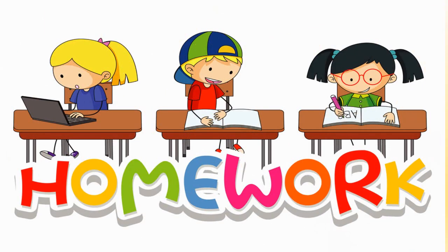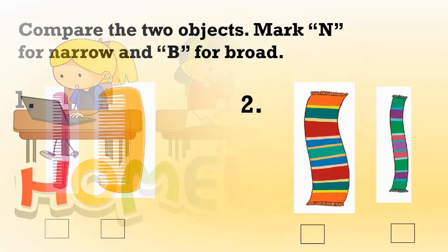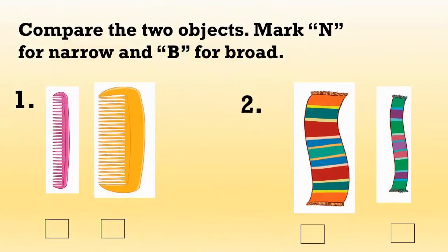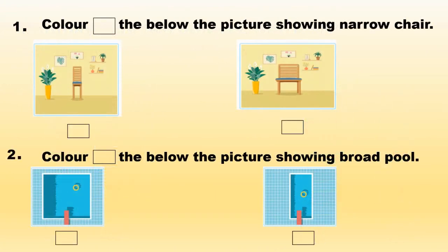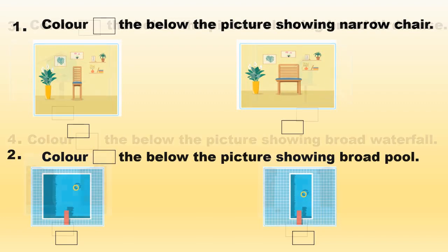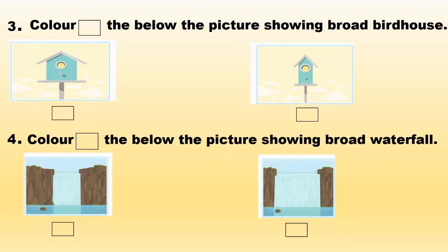Now it's your homework time. Compare the two objects and mark N for narrow and B for broad. Color the bracket below the picture showing the narrow chair. Second, color the bracket below the picture showing the broad pool. Third, color the bracket below the picture showing the broad woodhouse. Fourth, color the bracket below the picture showing the broad waterfall.